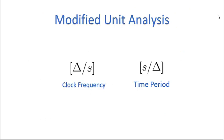Here we begin our discussion about modified unit analysis. The difference between standard unit analysis and modified unit analysis is that I add a symbol for the term 'cycle' and add a domain which I call the domain of oscillation. The unit of the domain of oscillation is delta — the Greek symbol delta — which means 'change in' in mathematics. One unit of change would be one oscillation. The unit of frequency, which I'm calling clock frequency in this case, uses this delta symbol.